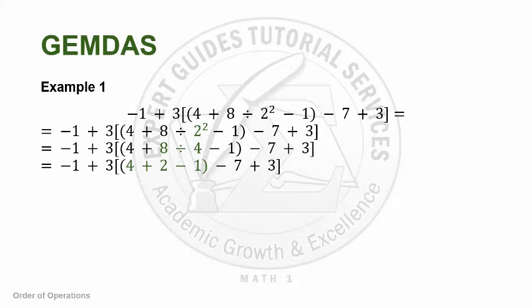The next thing we should notice is addition and subtraction. As I mentioned, we should perform GEMDAS from left to right. In this case, since 4 plus 2 comes before 2 minus 1, we should first perform 4 plus 2, then subtract 1 from the answer. The next equation would be negative 1 plus 3 times the quantity 5 minus 7 plus 3.